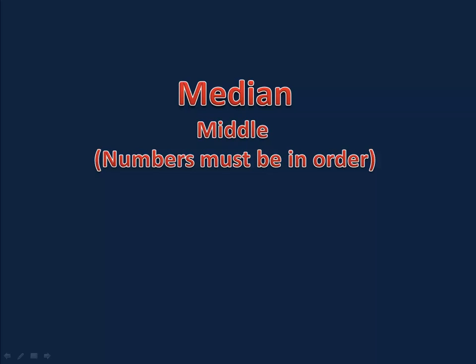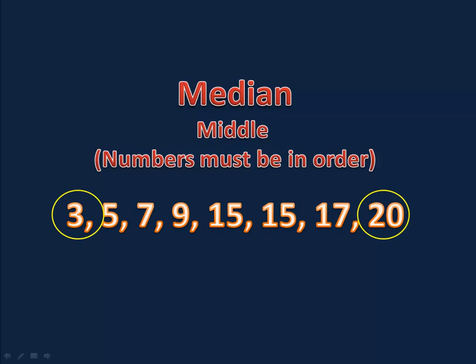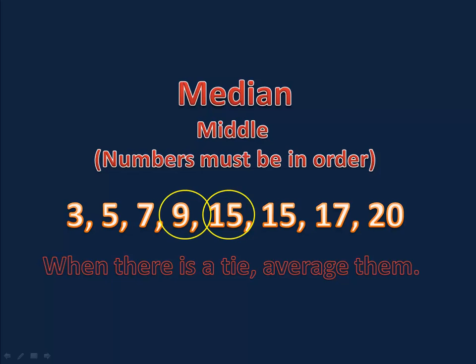The median is simply the middle number. We list the numbers from smallest to largest, and then we find the one that's exactly in the center. If there's only one number in the center, then it's easy. That's your median. If there's a tie, as there is here, with 9 and 15, we simply average them. 9 plus 15 divided by 2 is 12. The median is 12.